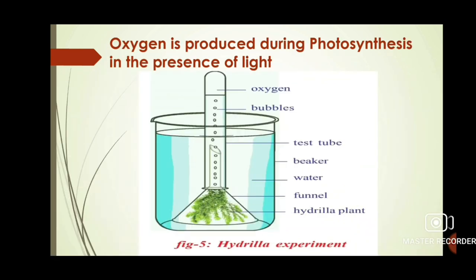The next experiment: Is oxygen produced during photosynthesis in the presence of light? Take a beaker filled with water and a funnel. Fix a hydrilla plant in the funnel and invert it in the beaker without letting water out. Take a test tube, close its opening with your thumb, and place it over the funnel as shown in the picture. After some time, you will observe oxygen bubbles coming through the hydrilla plant rising to the top of the test tube.